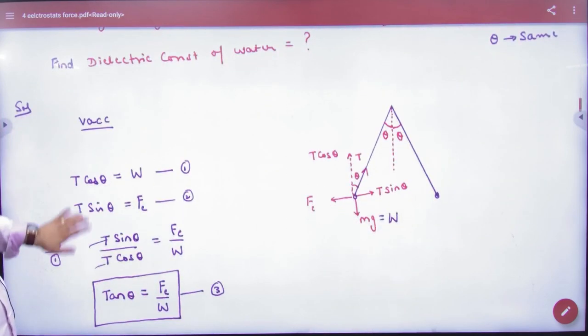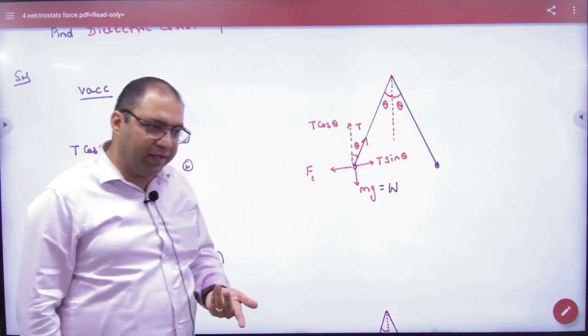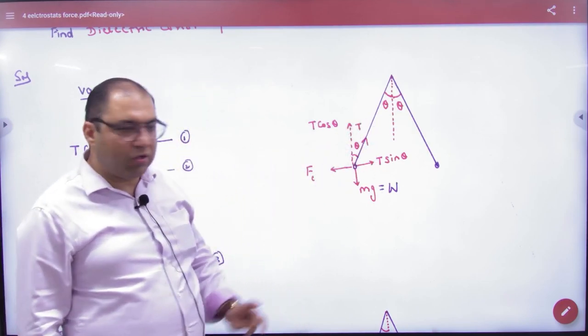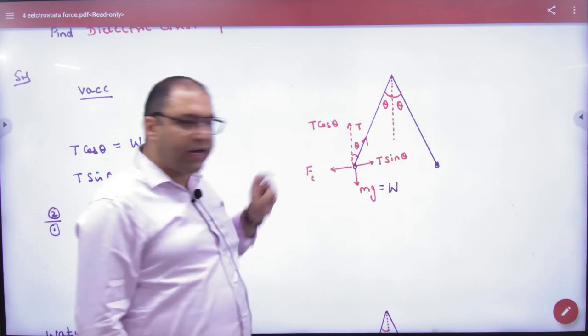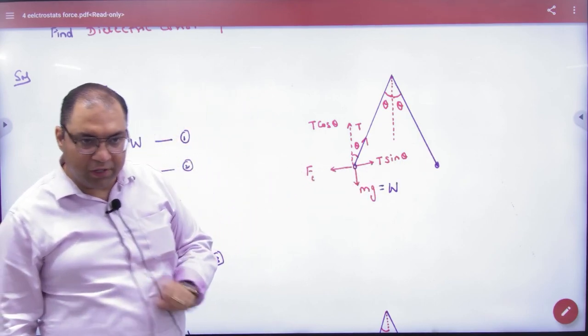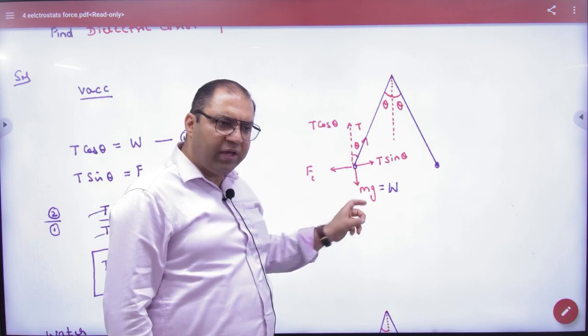The rule is that you have to make a tension. So this is theta and this is theta. The two components of the tension: Tcos theta and Tsin theta. This is the electrostatic force of repulsion, the value of Fc, and the weight is Mg.